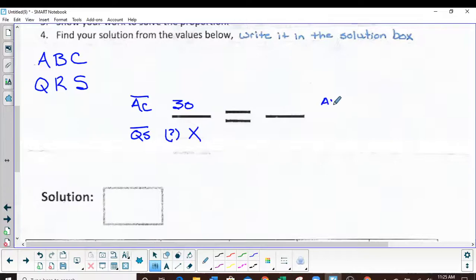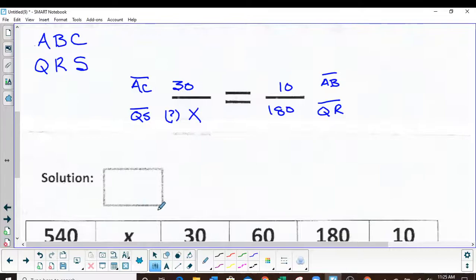Over here we'll choose AB because it's got a dimension on it of 10, that way I got some numbers. And then I'll correspond to AB by, look right here, AB to QR, so I know they're corresponding. And the QR measurement is 180, I believe.